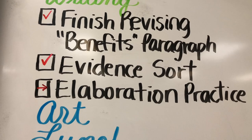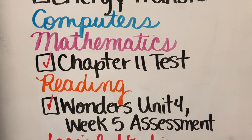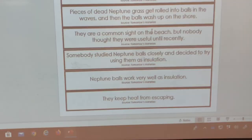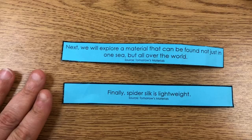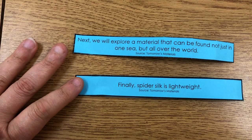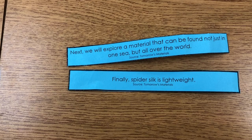Then we went into our specials, lunch, and science — we were looking at energy transfer. The rest of the day wasn't as exciting because they were taking a test in math and a test in reading, which they needed more time for, so I moved social studies to tomorrow. The evidence sort started with a PowerPoint I put together with sentences from the sources they read for yesterday's practice test. I put all of these sentences on strips of blue paper, because blue is our color for evidence. The kids were tasked to get together with other people that had similar evidence so they could group together.